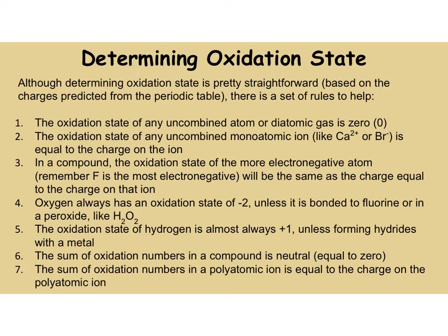In a compound, the oxidation state of the more electronegative atom — remember, as you go across the periodic table, electronegativity goes from francium, which is the weakest, all the way to fluorine, which is the strongest. Fluorine is the most electronegative. The more electronegative atom overrides the oxidation state. Oxygen is always negative 2 unless it's bonded to fluorine or in a peroxide like H₂O₂.